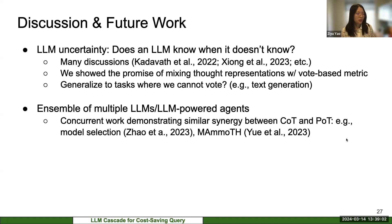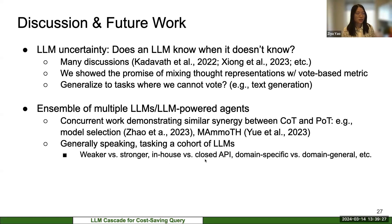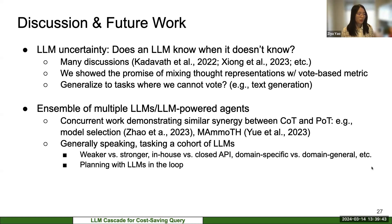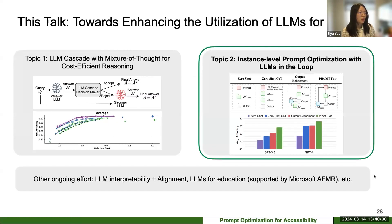Two concurrent works also demonstrate the synergy between CoT and PoT — particularly MAMMOTH, which shows that for mathematical reasoning, mixing CoT and PoT in training data is beneficial. Looking ahead, we'd like to explore scenarios with in-house versus closed APIs, domain-specific versus domain-general language models, and how a decision maker can test a cohort of LLMs for a specific task to decide which to use. The key challenge remains: how do we know when an LM is uncertain?